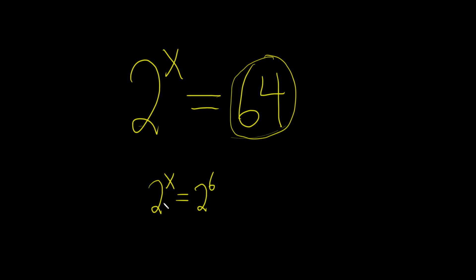So once we have the same base on both sides, you can just drop the 2s. You set x equal to 6, and that's the final answer. That's it.